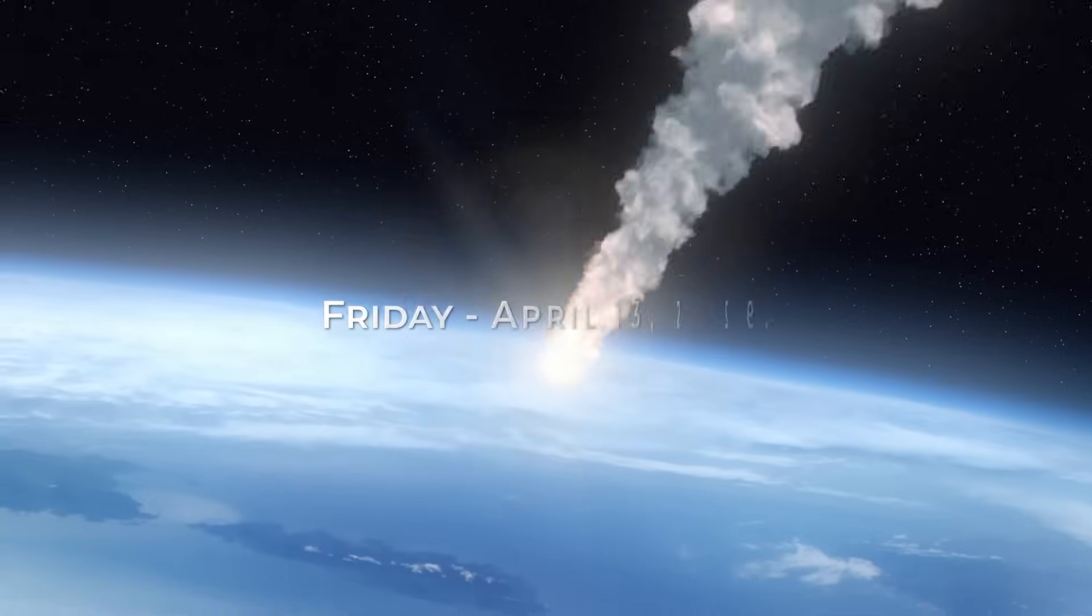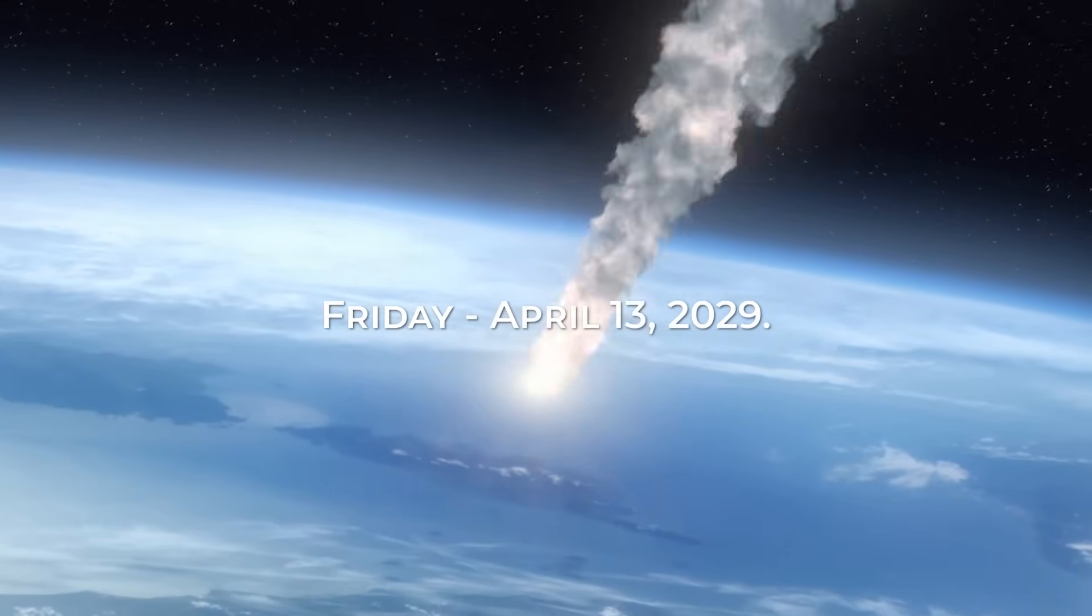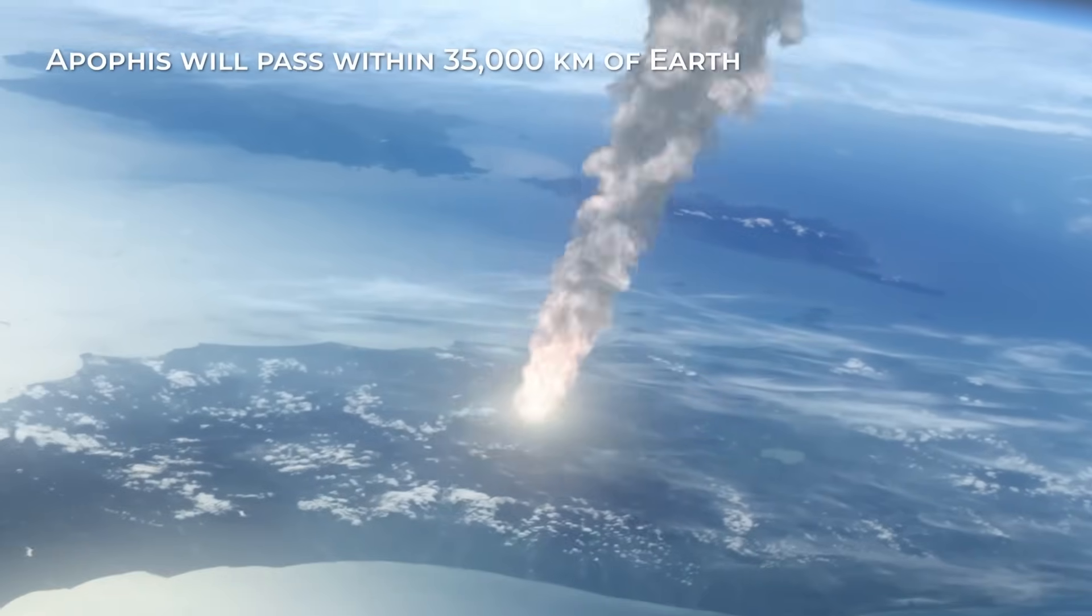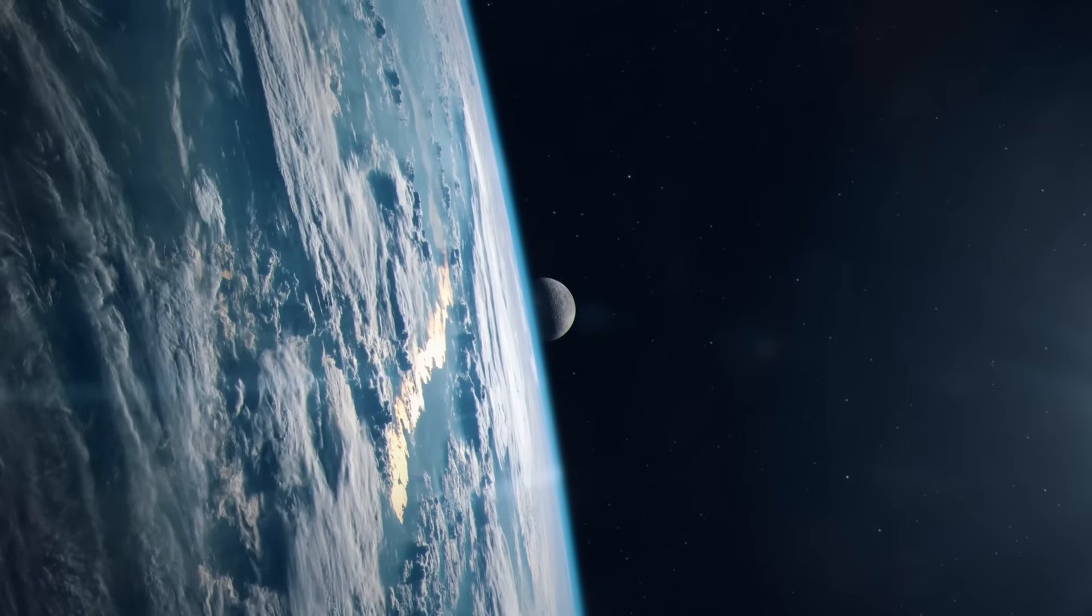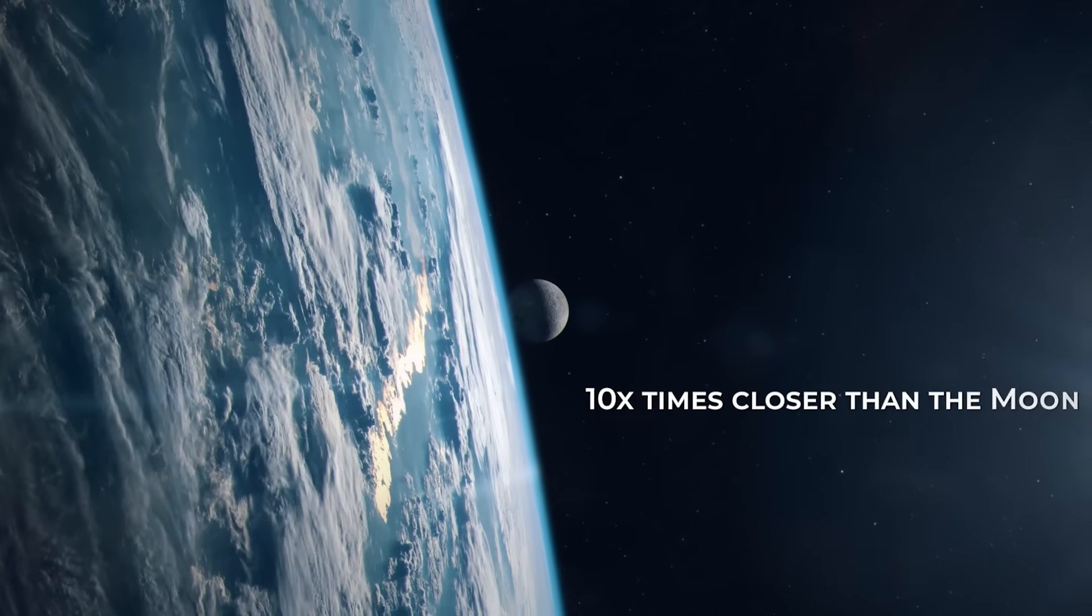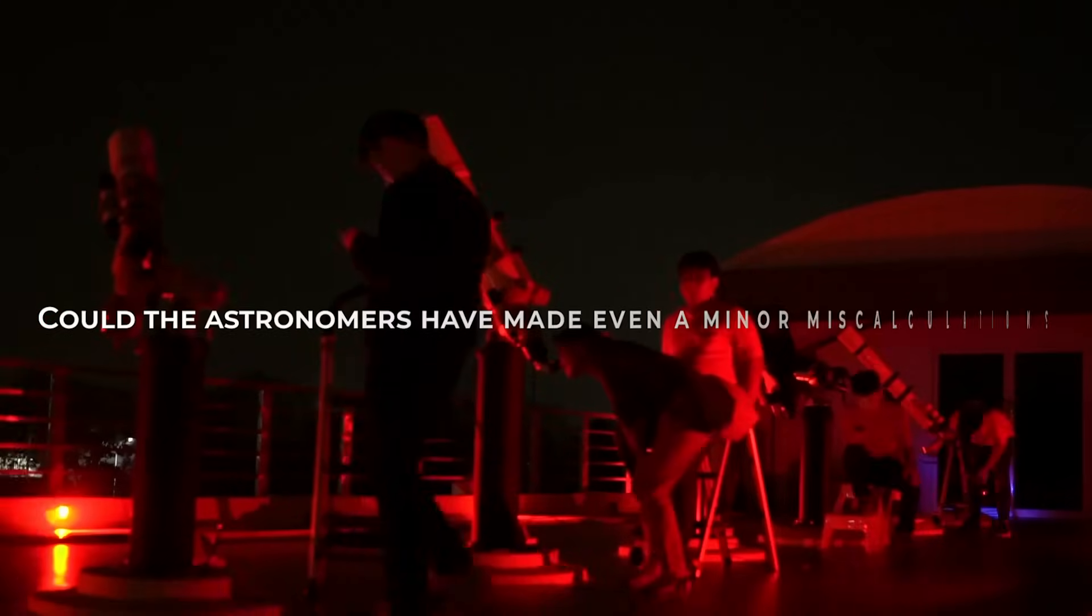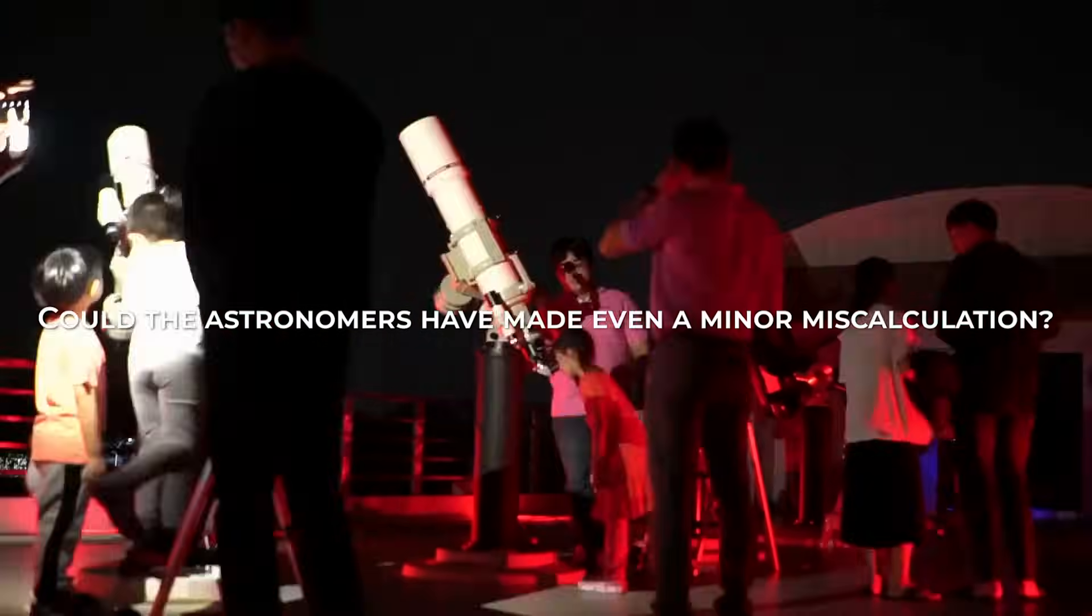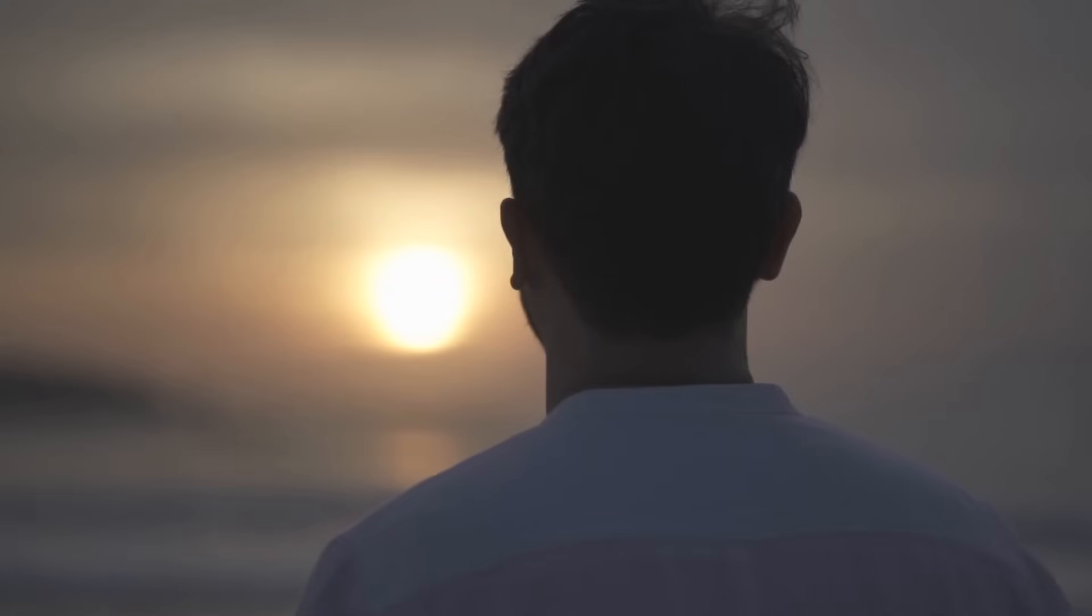The most critical close encounter will happen on Friday, April 13, 2029, when Apophis will pass within 35,000 kilometers of Earth. This proximity is incredibly near, 10 times closer than the Moon. The asteroid will even be visible to the naked eye. Many people expressed concern. Could the astronomers have made even a minor miscalculation, potentially leading to a collision with Earth? If such were the case, we would be in trouble.